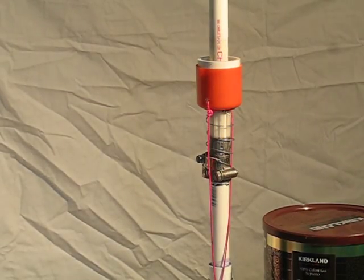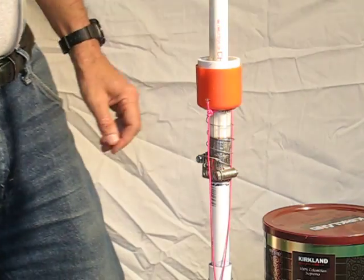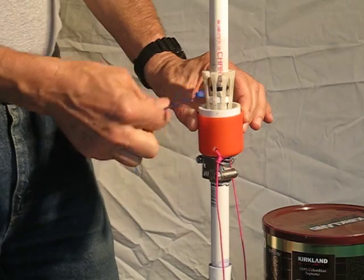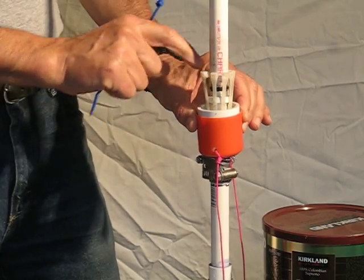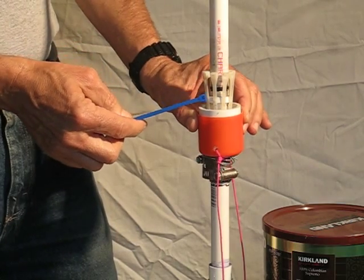Hello. I'm sure you recognize the typical PVC bottle rocket launcher made out of PVC pipe and cable ties. This mechanism locks the bottle on. This is called the Clark Cable Tie System.